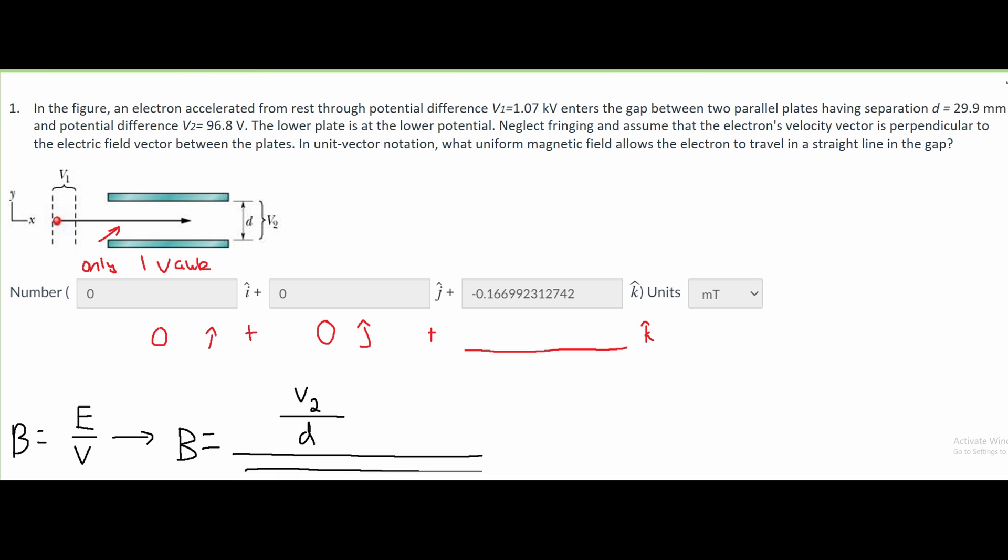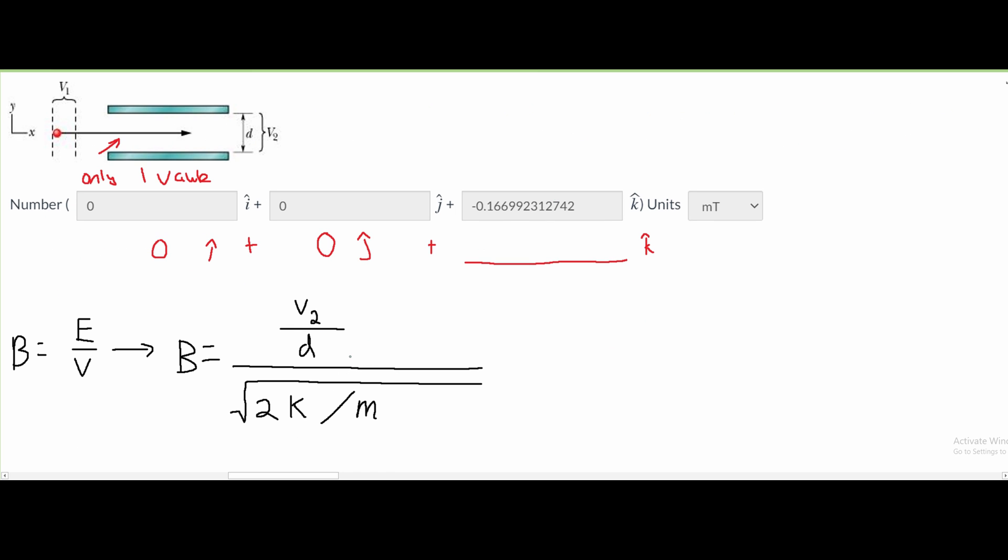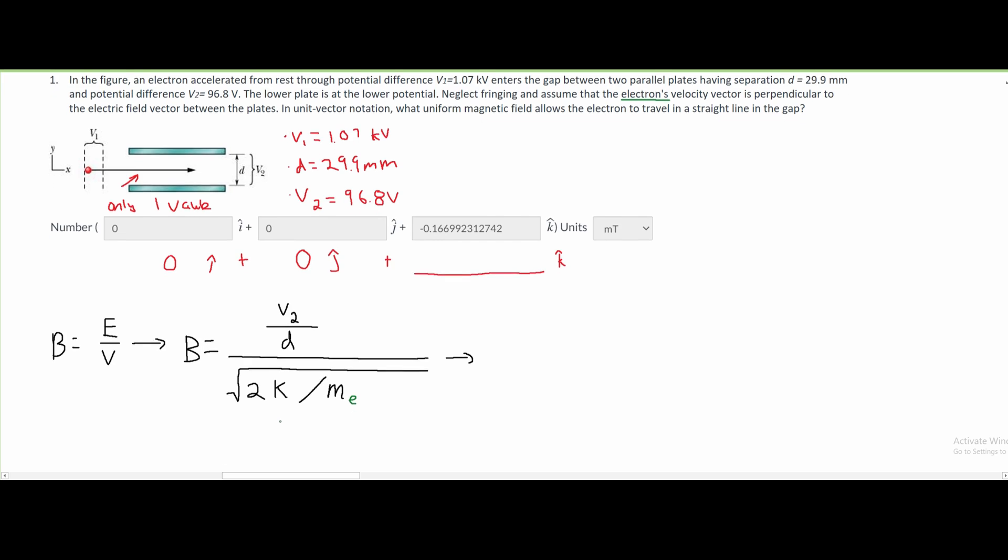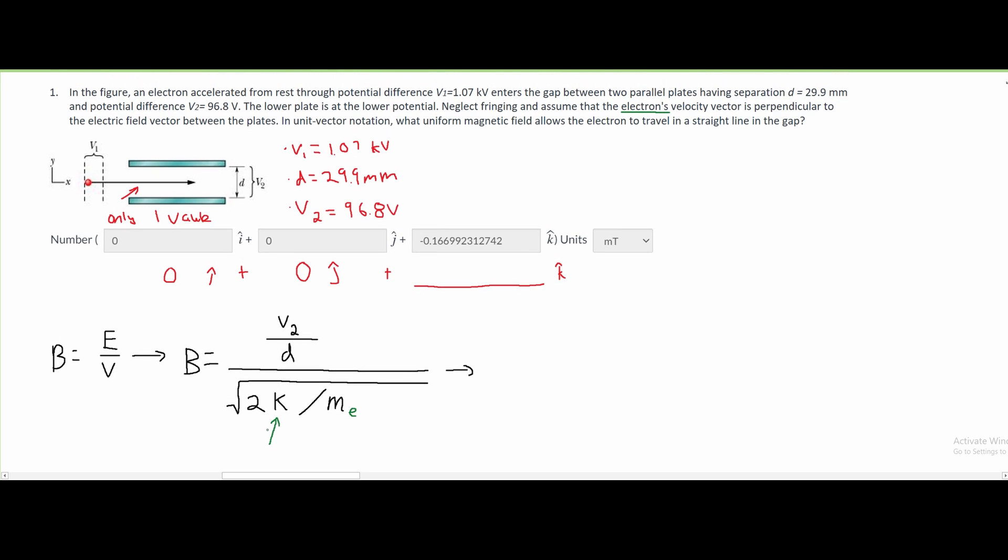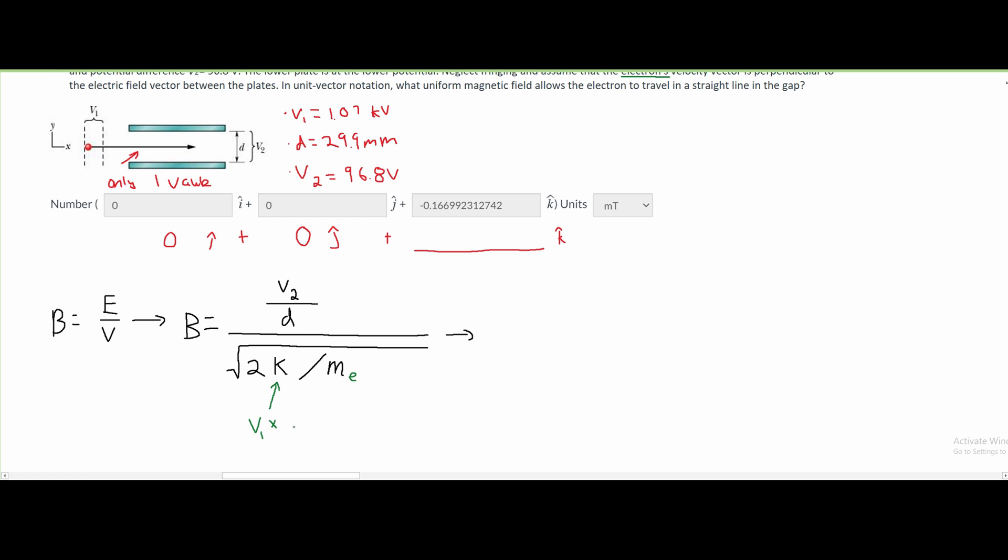We are dealing with electrons, so we're going to have the mass of an electron. And our k is going to be V1 times the charge of an electron, which we represent with q subscript e. If we rewrite our formula, we have B equals V2 over d times the square root of 2 times V1 times qe, all divided by the mass of an electron.